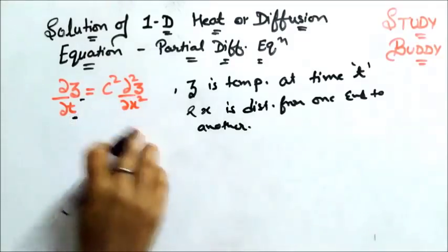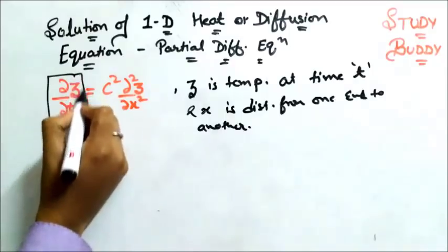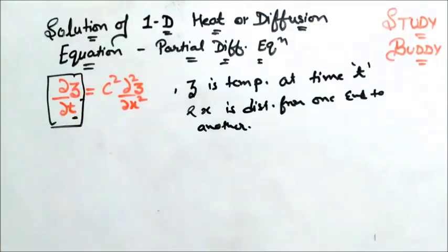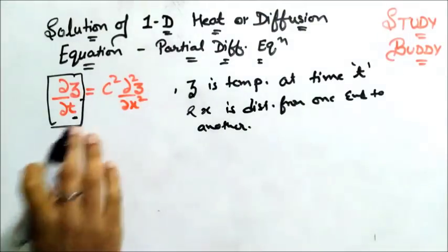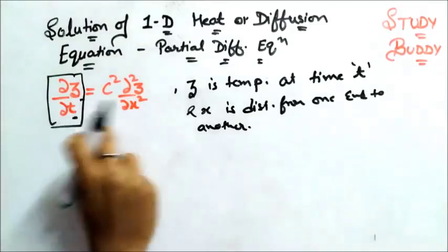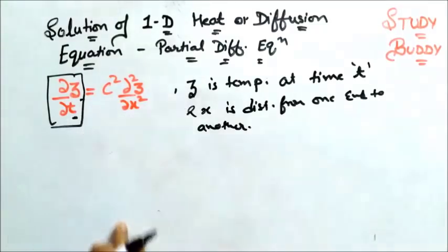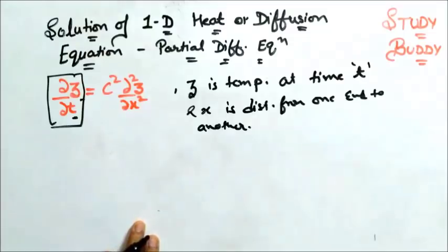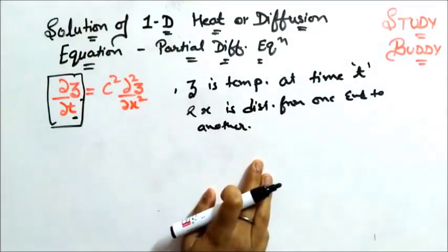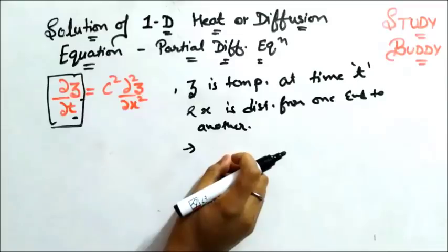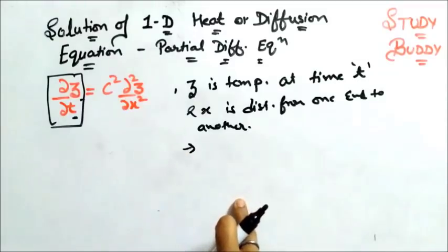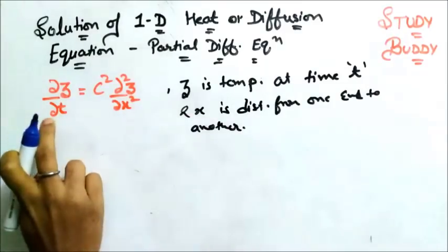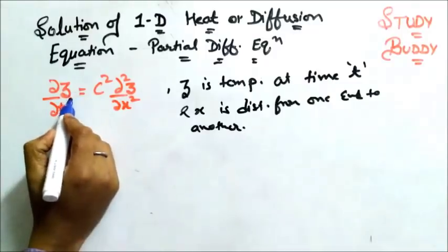When a question comes, you first need to remember this equation and then start solving it. If the solution itself is asked, you solve it directly. If initial conditions are given instead, you have to use the solutions we derive here to apply those conditions.